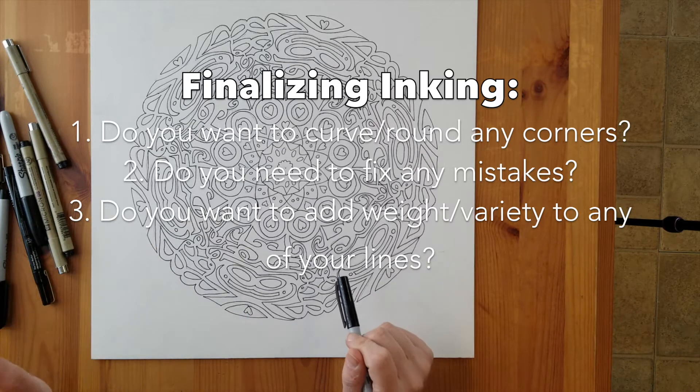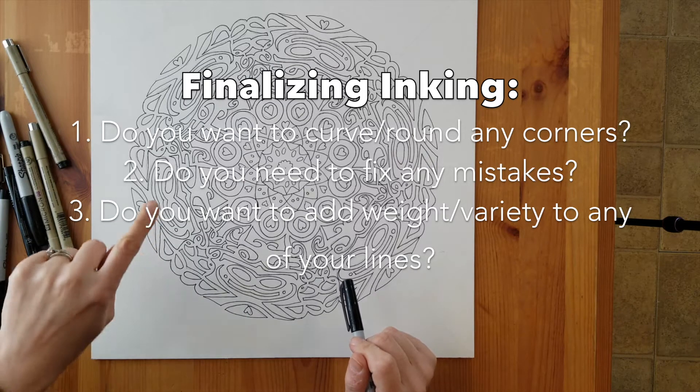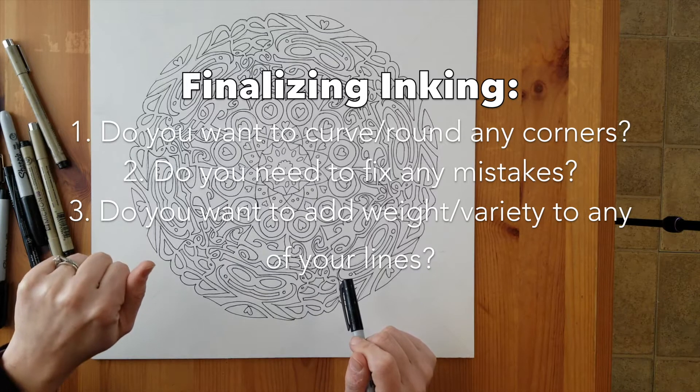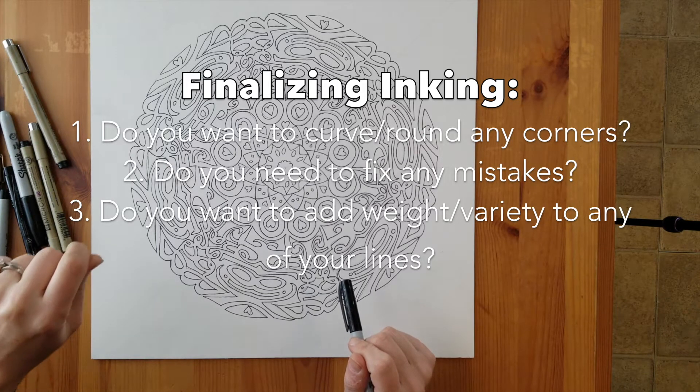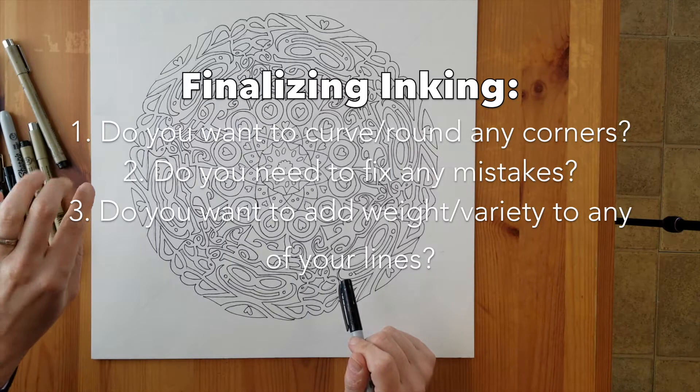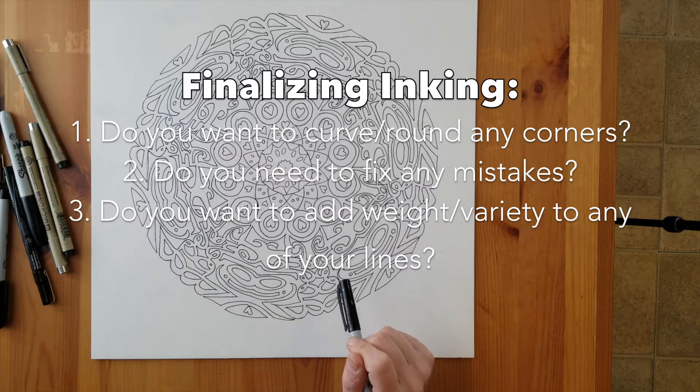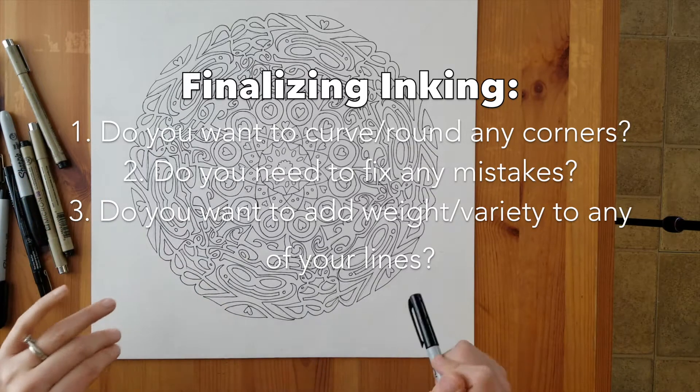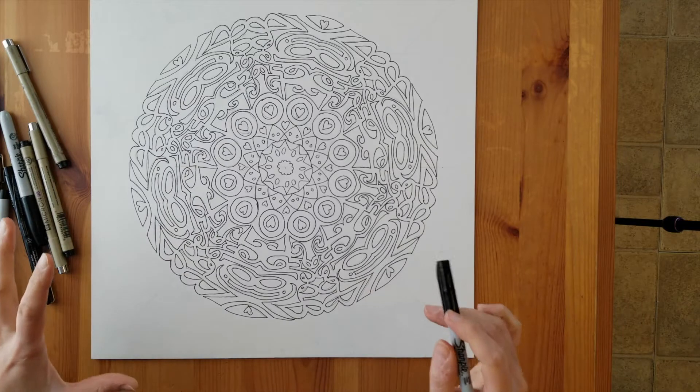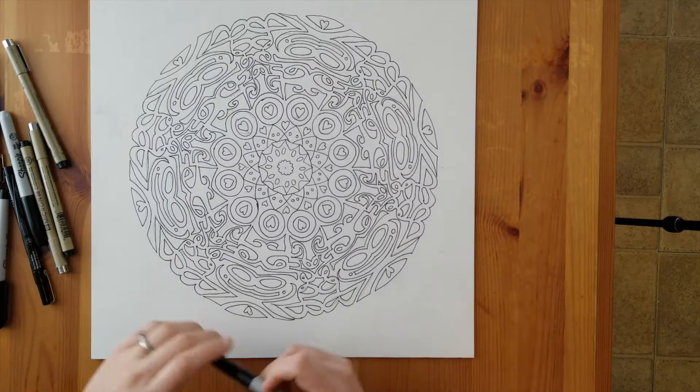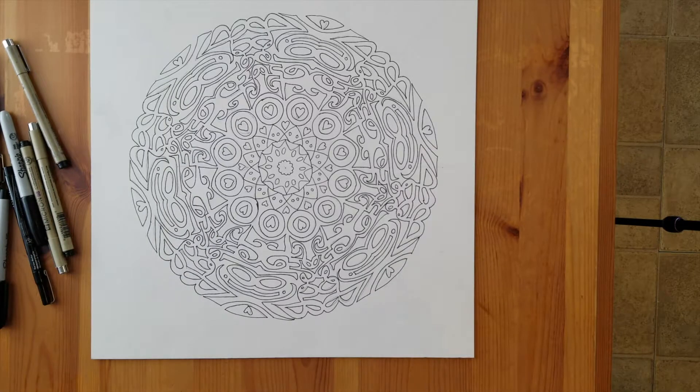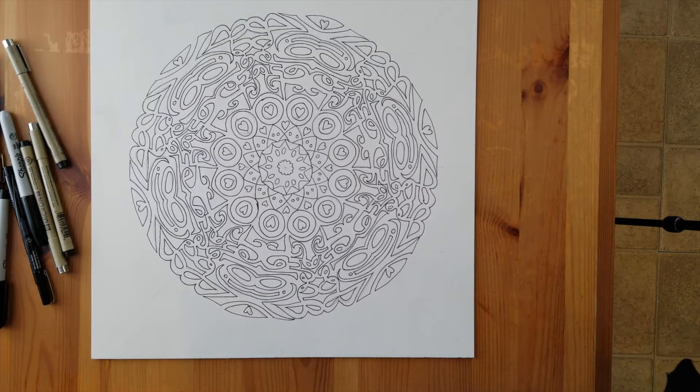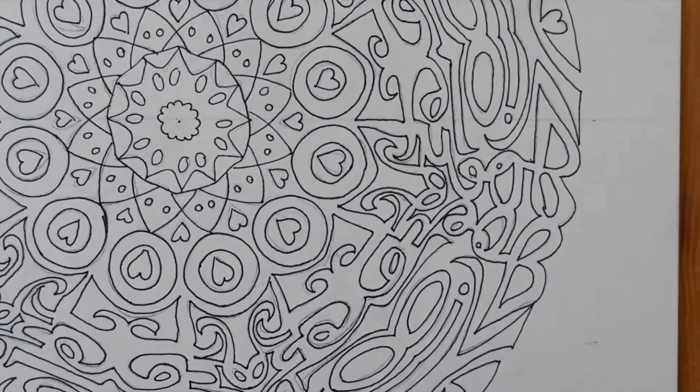And actually three things: curve any corners, fix anything, any mistakes, or add weight to any of your lines. So do any of your elements, do you want any of them to really stand out and have a thicker line? I'm gonna quickly show you here, I'm gonna just zoom in so you guys can see a little bit better.